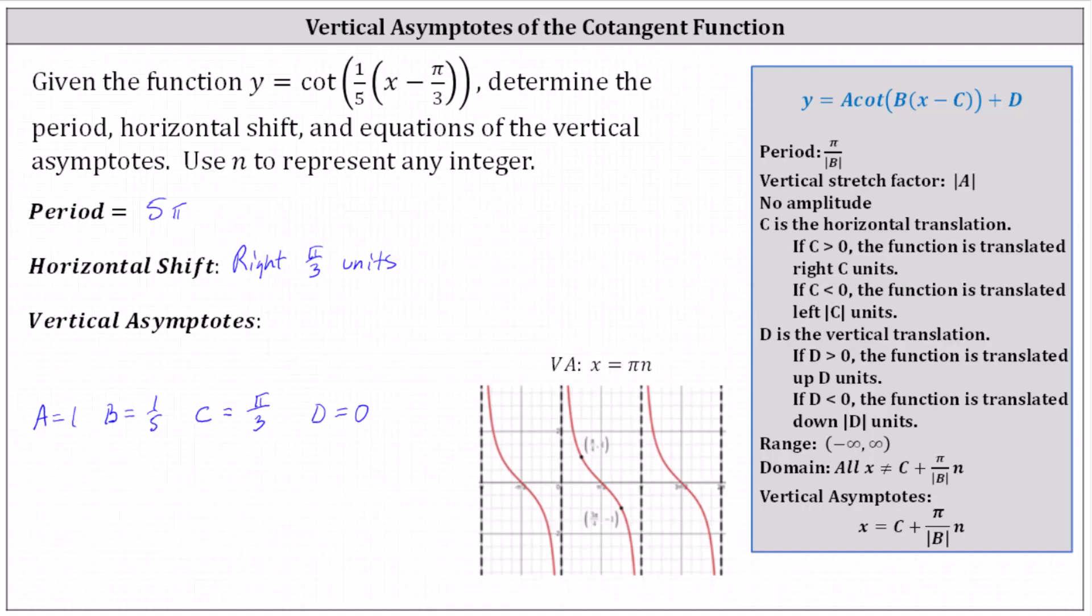Which means for our function, the equations of the vertical asymptotes are x equals c, which is pi divided by three, plus the period, which we know is five pi times n, where n is any integer. We'll leave it in this form. The equations of the vertical asymptotes are x equals pi divided by three plus five pi times n.